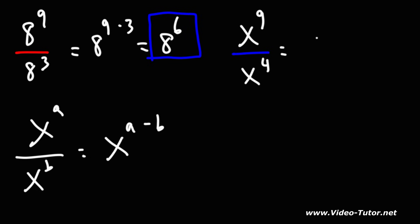For the second example, this is going to be x to the 9 minus 4, and 9 minus 4 is 5. So this simplifies to x to the 5th power.